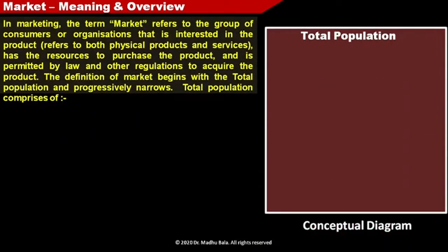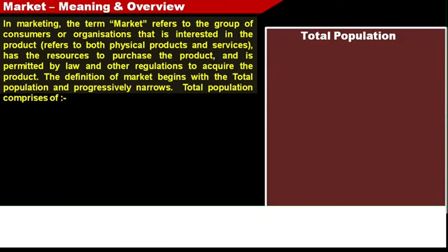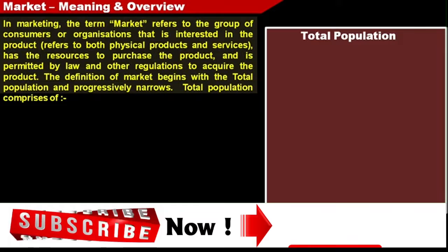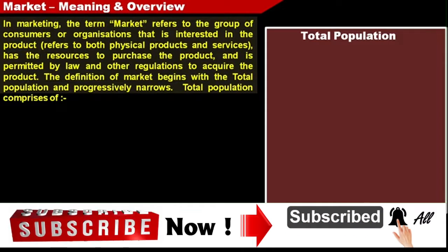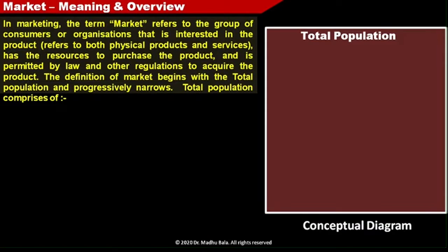What is market? In marketing, the term market refers to the group of consumers or organizations that is interested in the product. Here, product refers to both physical products and services, and that group of customers has the resources to purchase the product and is permitted by law and other regulations to acquire the product.